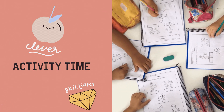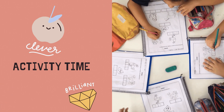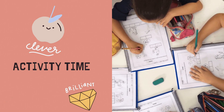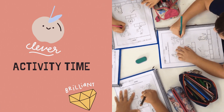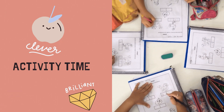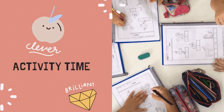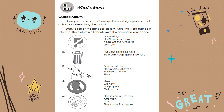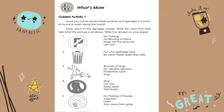It's activity time. There are plenty of activities prepared just for you so you can put into practice everything that you learned in this module. Ready your pencil and your notebook because we will begin answering. For what's more, guided activity 1: have you come across these symbols and signages in school, at home, or even along the roads? Study each of the signages closely. Write the word that best tells what the picture is all about. Write your answer on your paper.